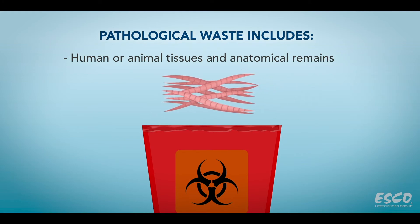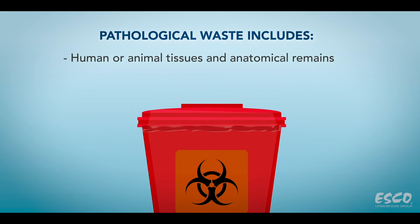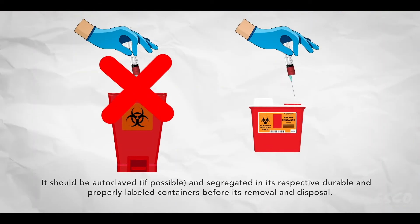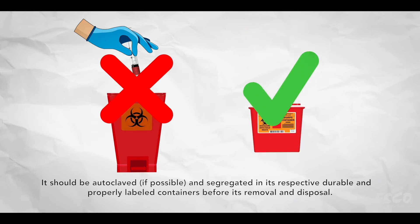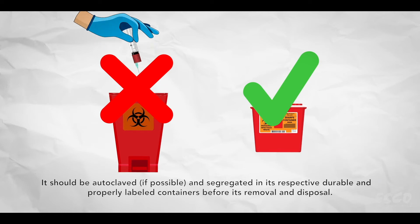Pathological waste includes human or animal tissues and anatomical remains. These should be collected in leak-proof sealed bags, autoclaved if possible, and segregated in their respective durable and properly labeled containers prior to removal and disposal.